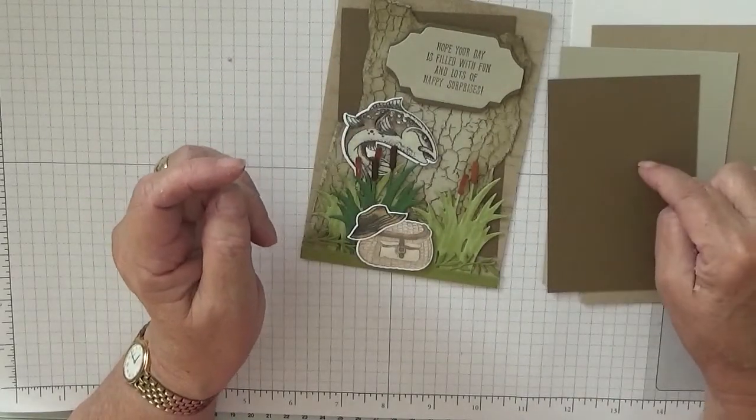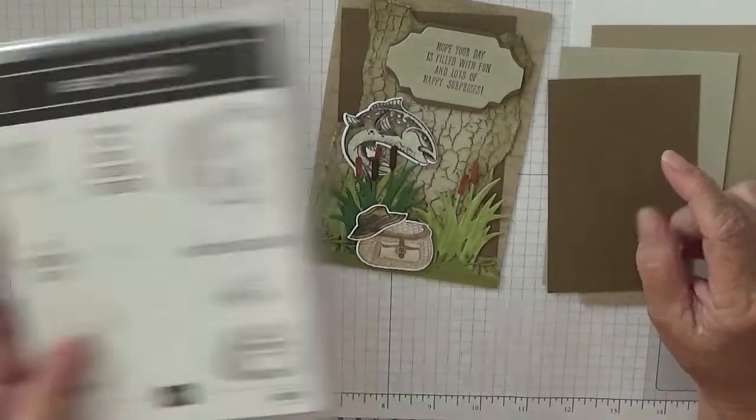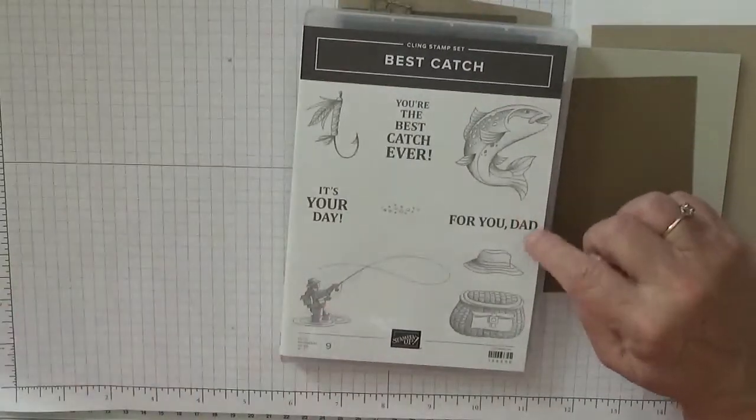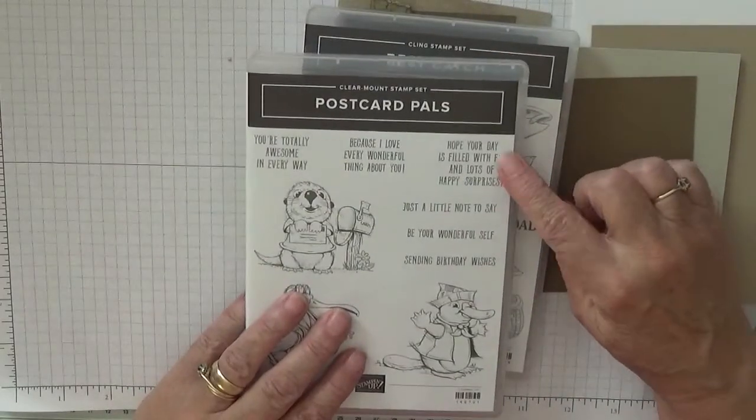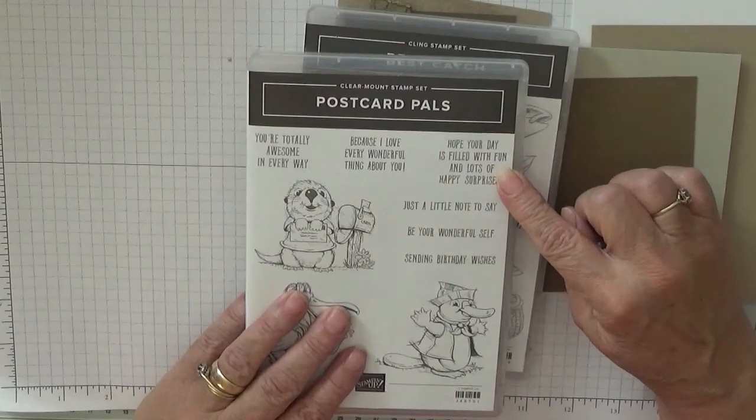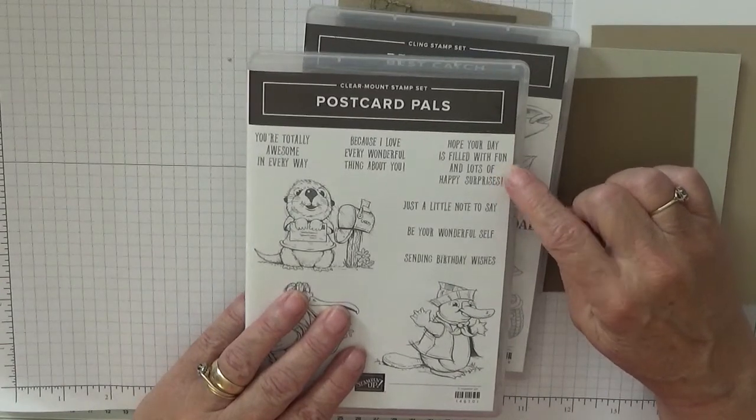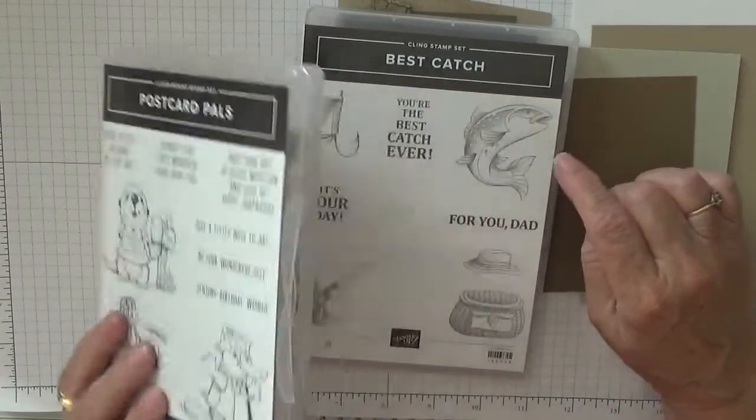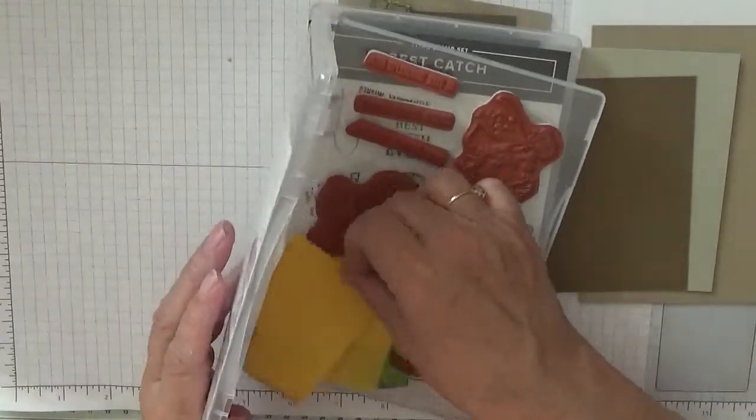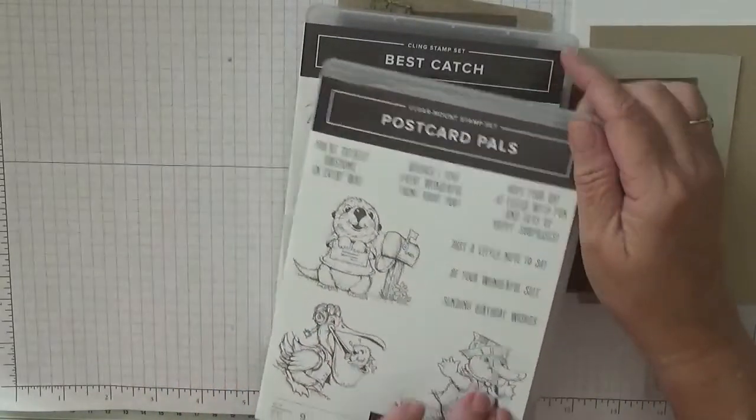The stamp sets we're using obviously is Best Catch. The sentiment has come from Postcard Powers and says hope this day is filled with fun and a lot of happy surprises, because for most men it's a happy surprise when he catches a fish.